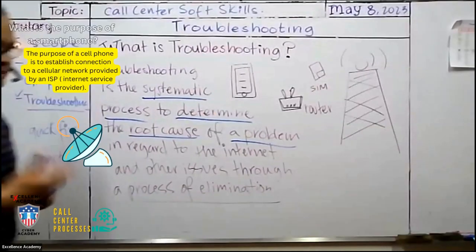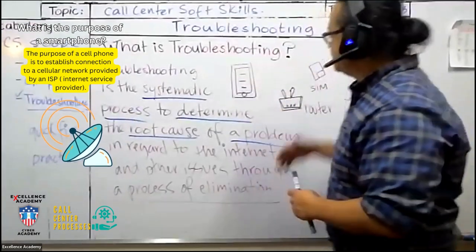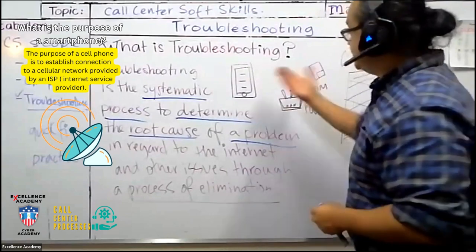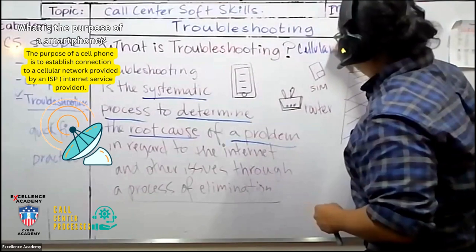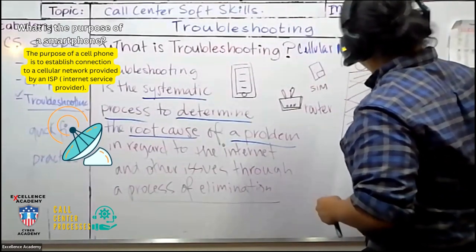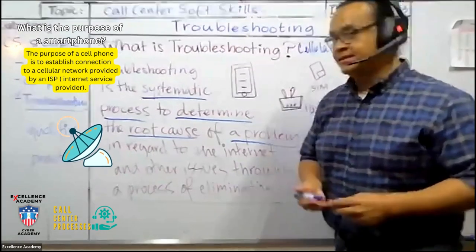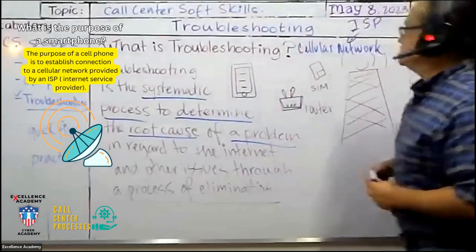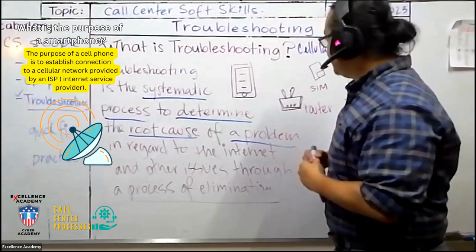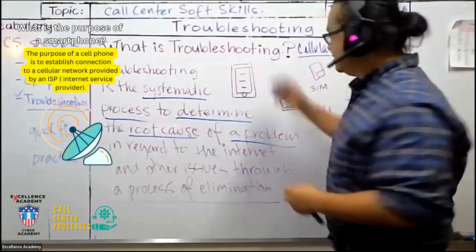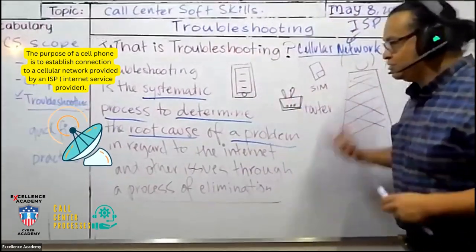What does that mean? So, let's say that this is your smartphone. A smartphone's main purpose is to establish connection to a cellular network, which is provided by an internet service provider, which could be AT&T, Verizon, or in Guatemala, Tigo, or Claro. So, its main purpose of a cell phone, of a smartphone, is to always establish connection to a cellular network. That's why it exists.